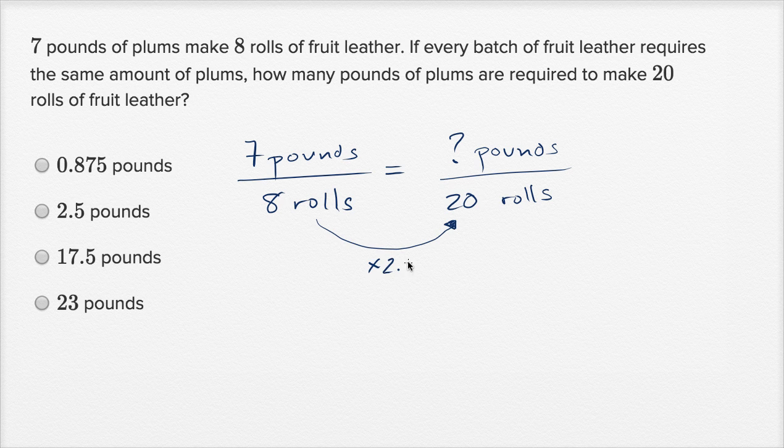So we multiplied by two and a half, or we have two and a half times as many rolls when we go from eight to 20. So we're going to need two and a half times as many pounds to keep the ratios constant. Times 2.5.